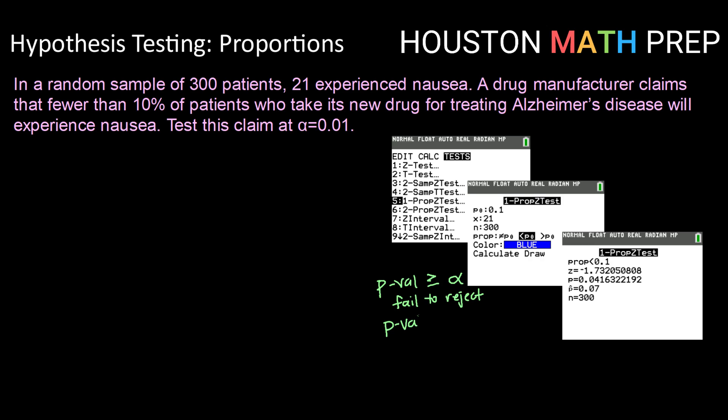But if we get a p-value that is less than our significance level, if the probability of having a sample like the one we got is very small, then that means it's very unlikely that the null hypothesis is true, so we will reject.